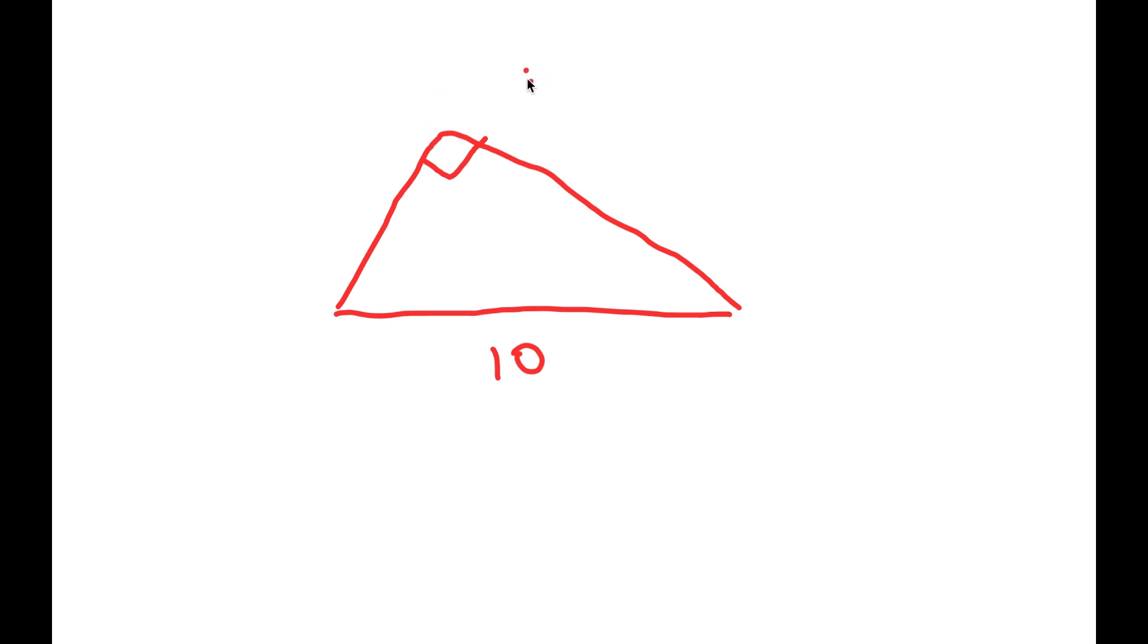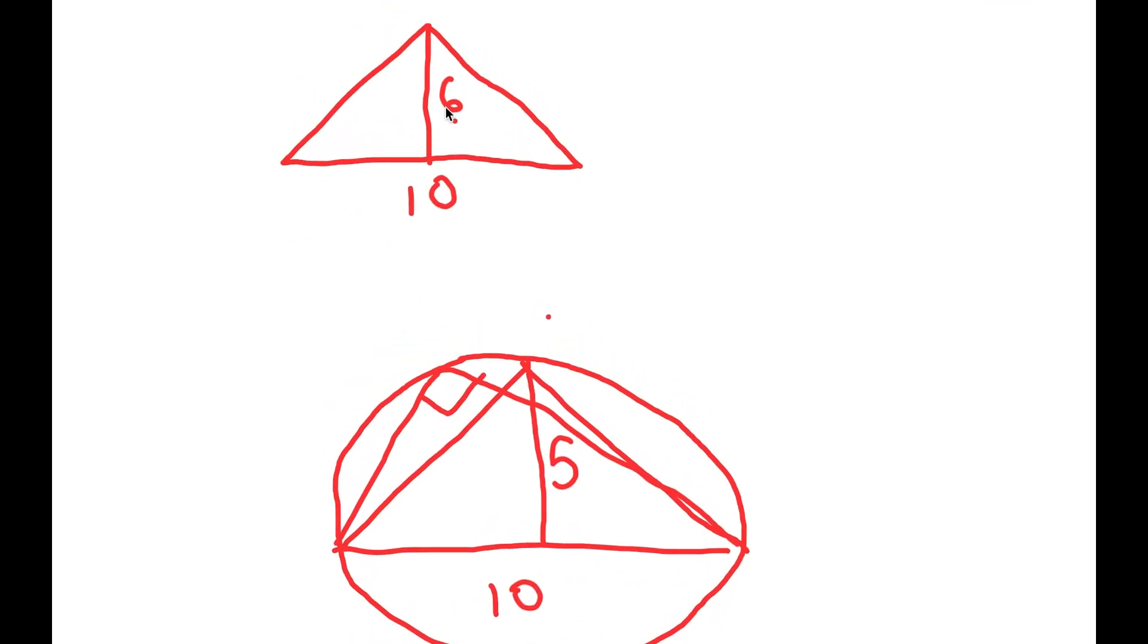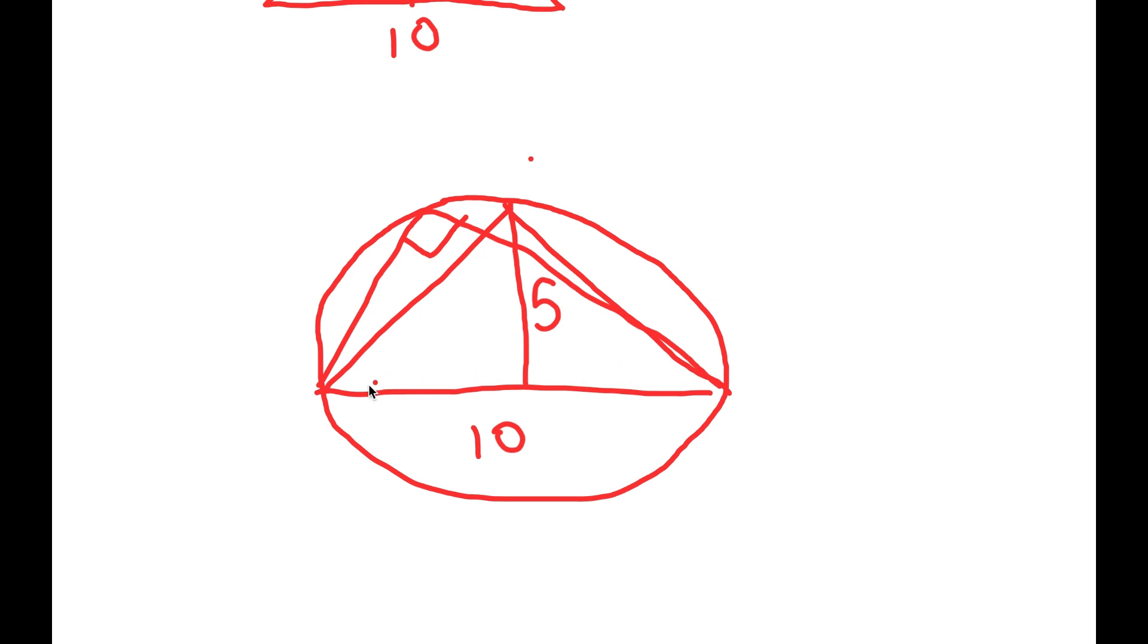Then, let's say we draw a circle around here. So, if we draw a line to here to here, let's say this is the radius. And, we draw two angles right here. Well, the length of this is 5, right? We were given that this is equal to 6. But, this has to equal 5 because this has to be half of the entire length, which is diameter.